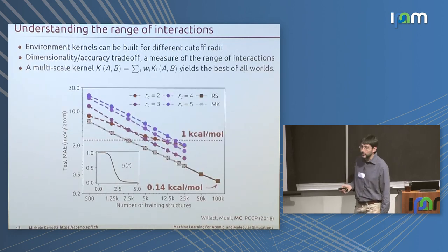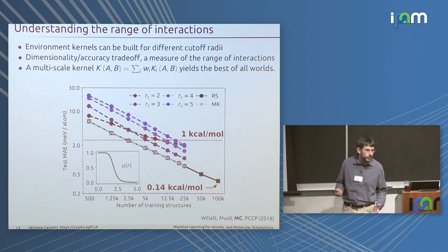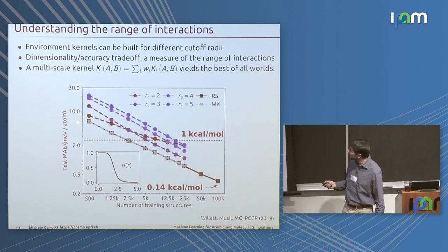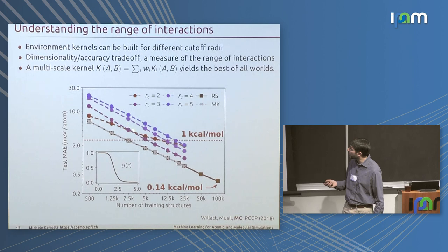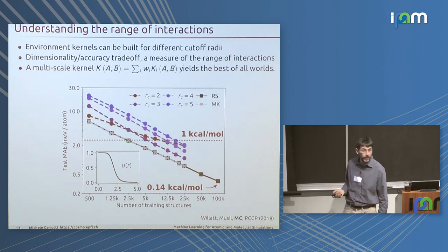You can also build a model that combines representations built with different length scales. When you do that and adjust the weights properly, you get a model that performs much better than any individual model. For this dataset, you hit 1 kcal/mol with about 2,000 reference structures.